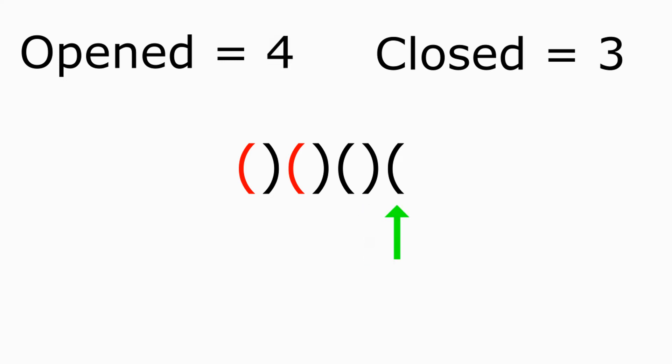Now open parentheses are outnumbering closed, but this is the end of the string. Once we finish iterating, we just have to add as many closed parentheses as necessary to make them equal. For example, if we have 10 open and only 3 closed, we add 7 more closed at the end. So we add open parentheses immediately when needed, but we wait until the end to add closed parentheses.